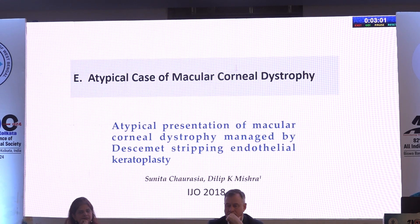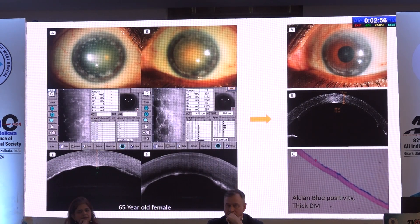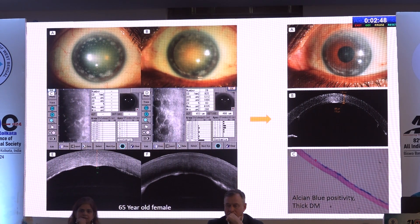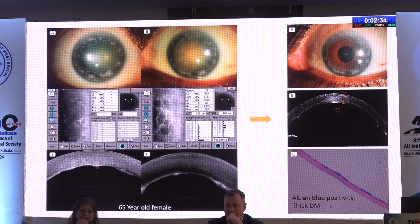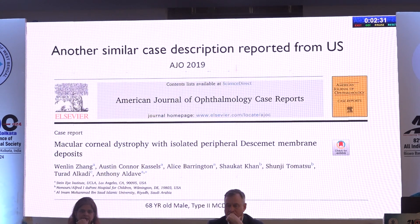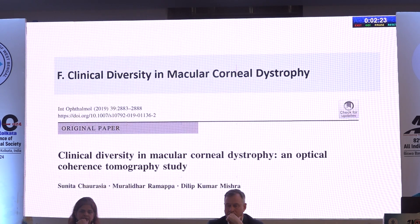Sharing some atypical cases: one patient presented with lesions localized in the peripheral cornea with a severely thickened and then grossly thinned Descemet's membrane on OCT. The central cornea showed clarity, and this patient was managed not with DALK, not with PK, but with DSEK. A similar description has been reported from the US by Daveghu, where similar findings were noted in a case of macular dystrophy.